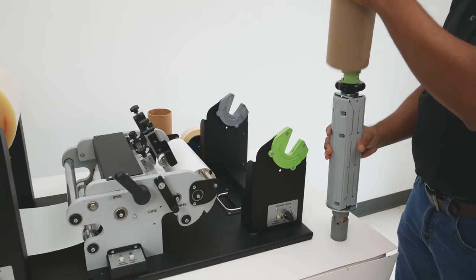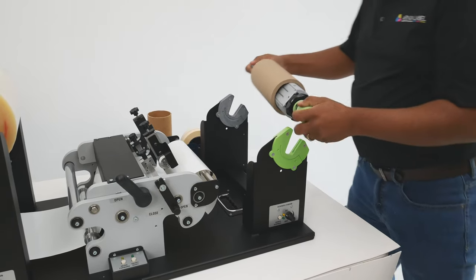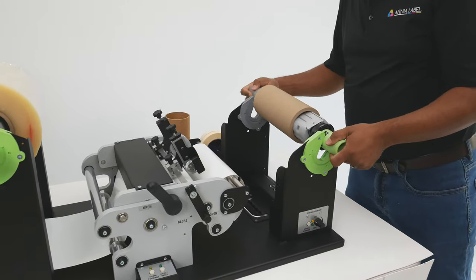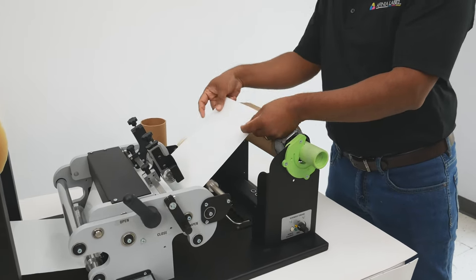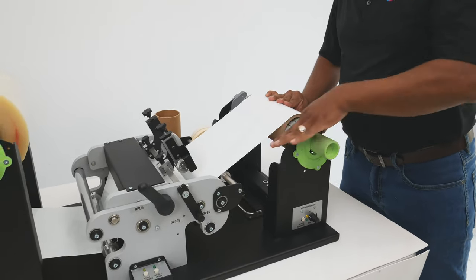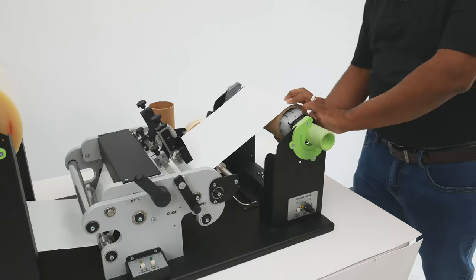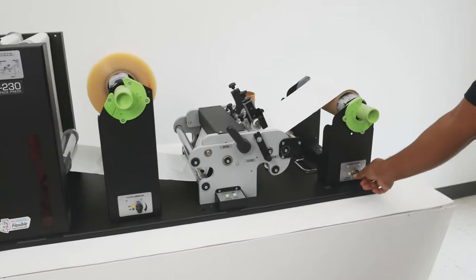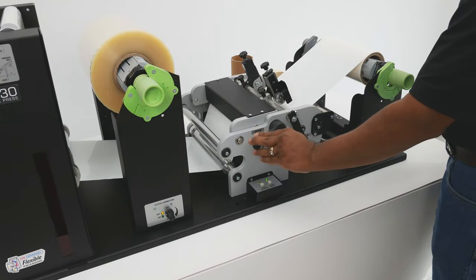A blank core is slid into the rewinder and left to move freely for alignment. We'll pull evenly on the media, position the core and lock it in place with the tension knob. Tape the media in place with even tension. Let's turn on the rewinder, then secure the locking lever.